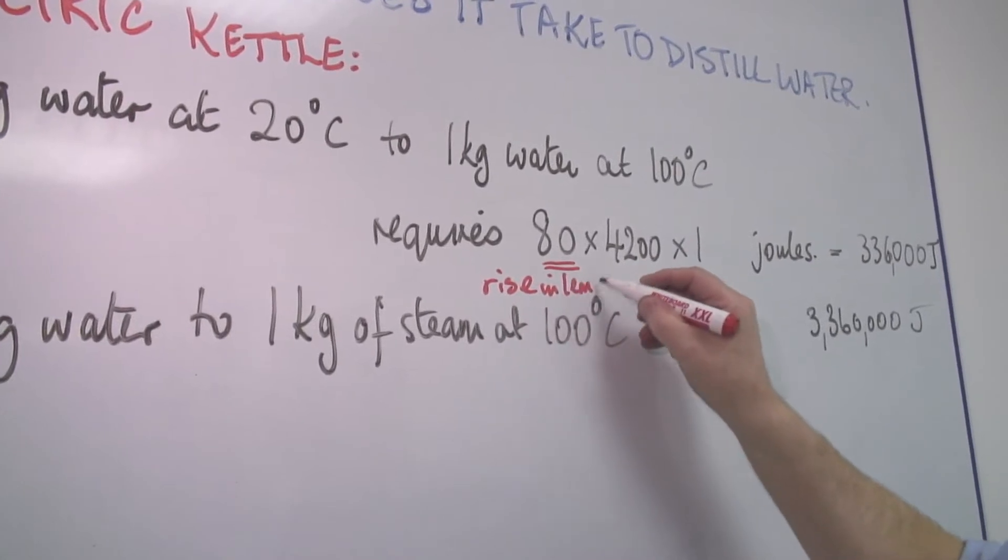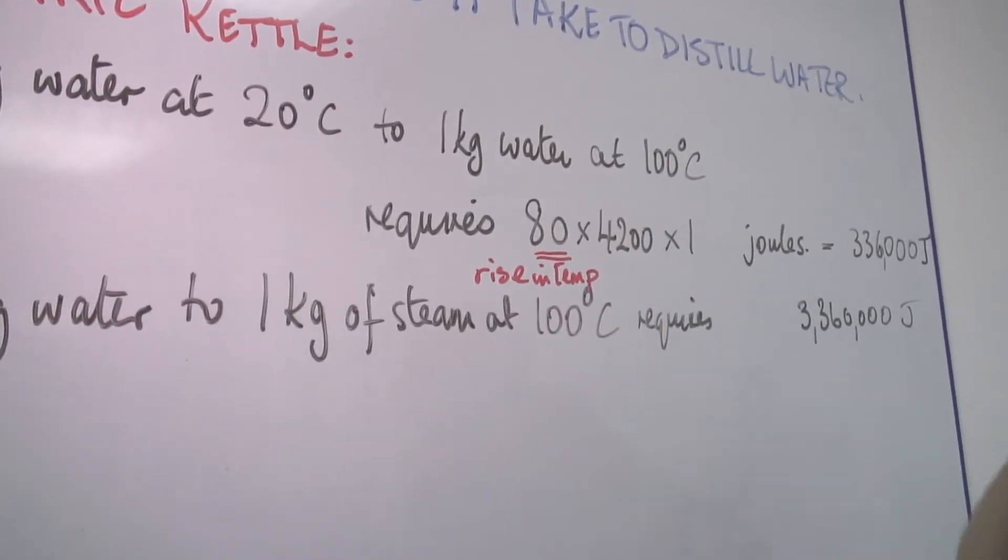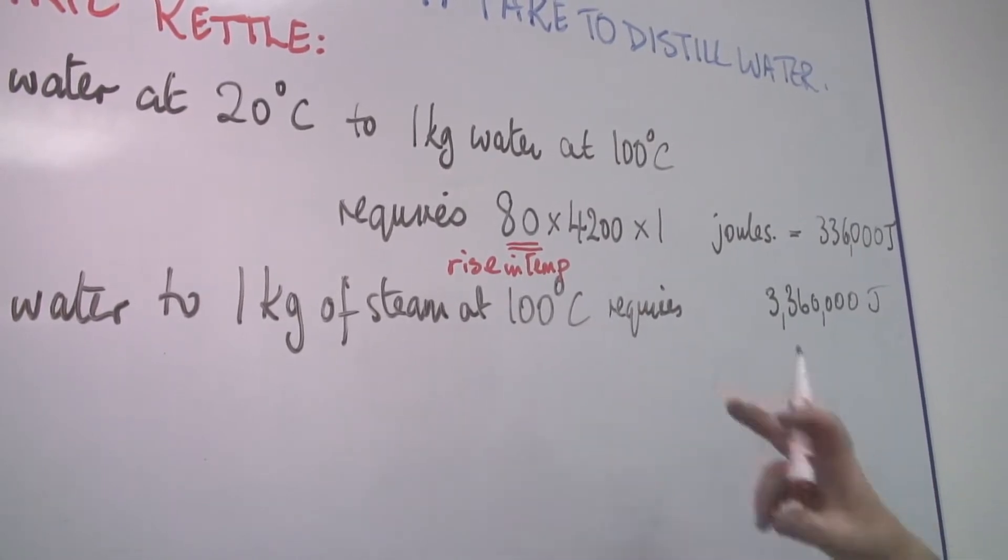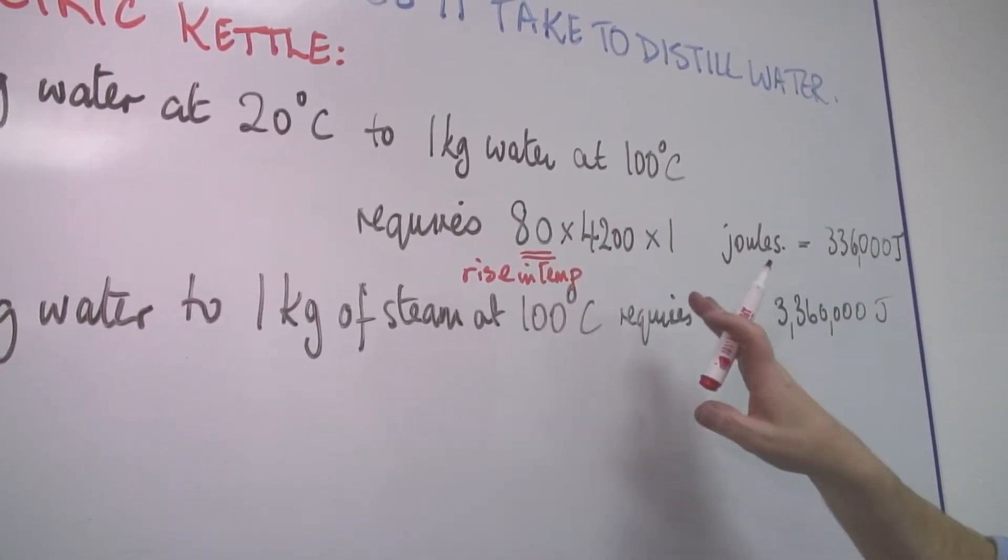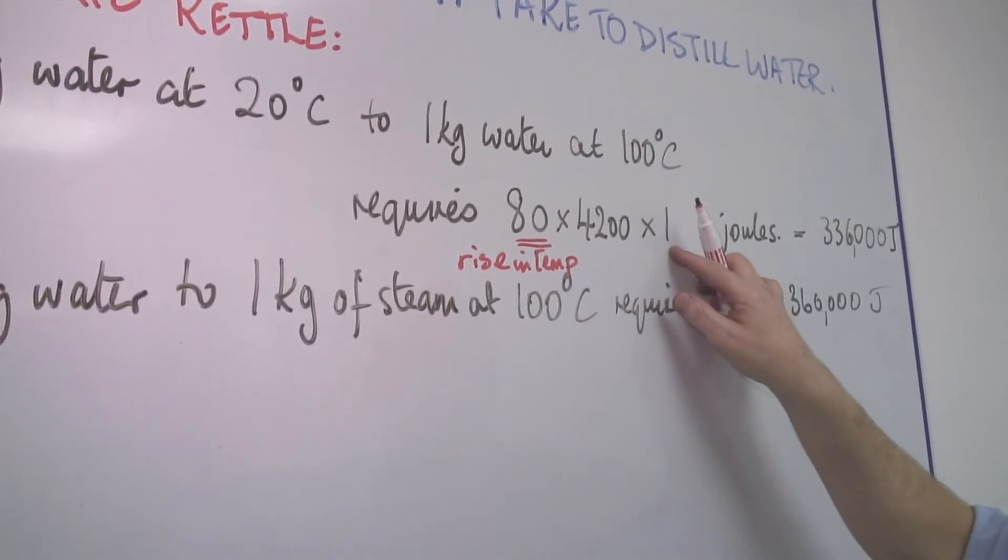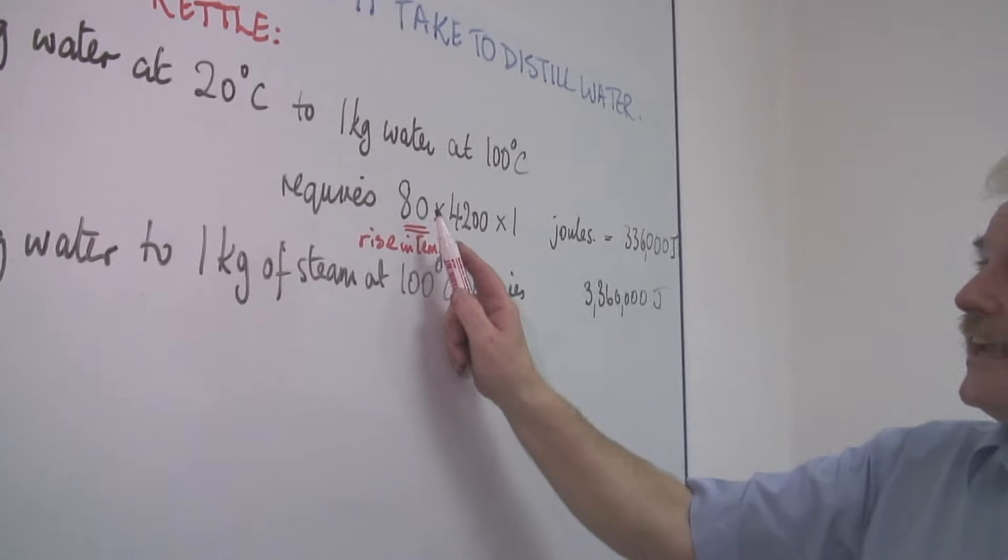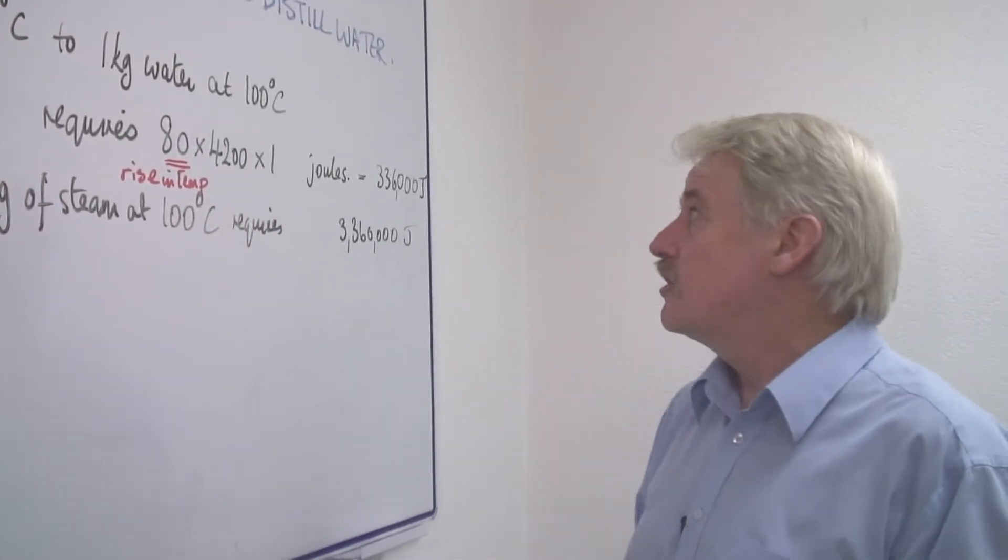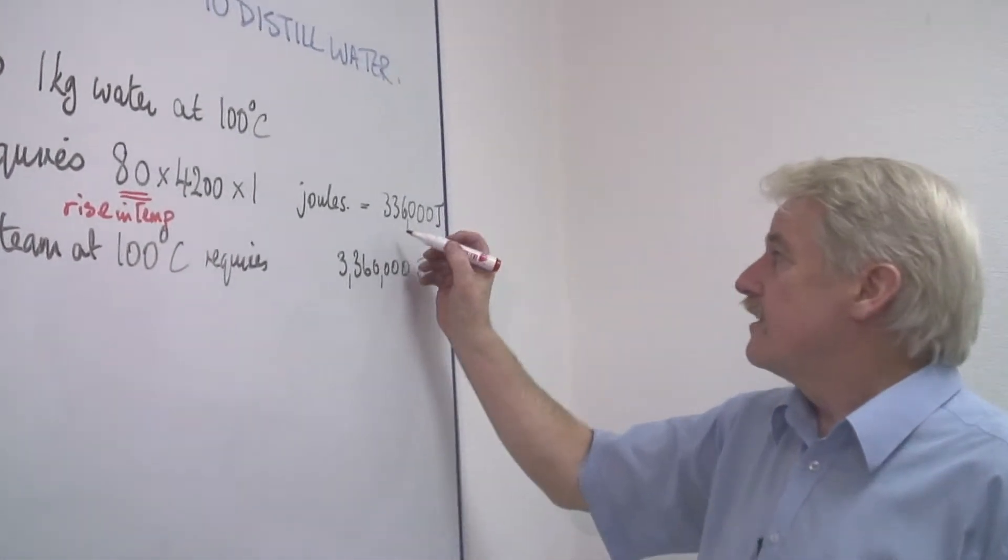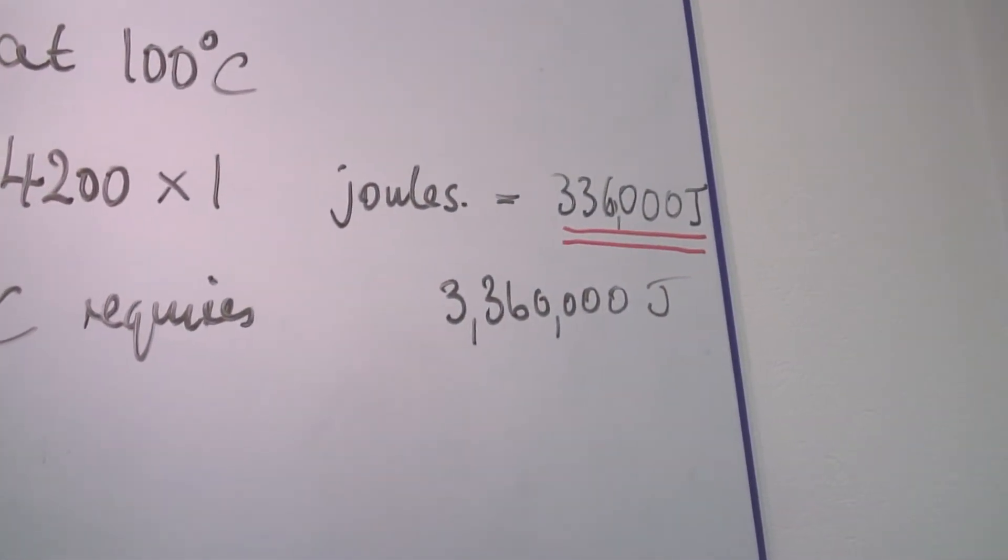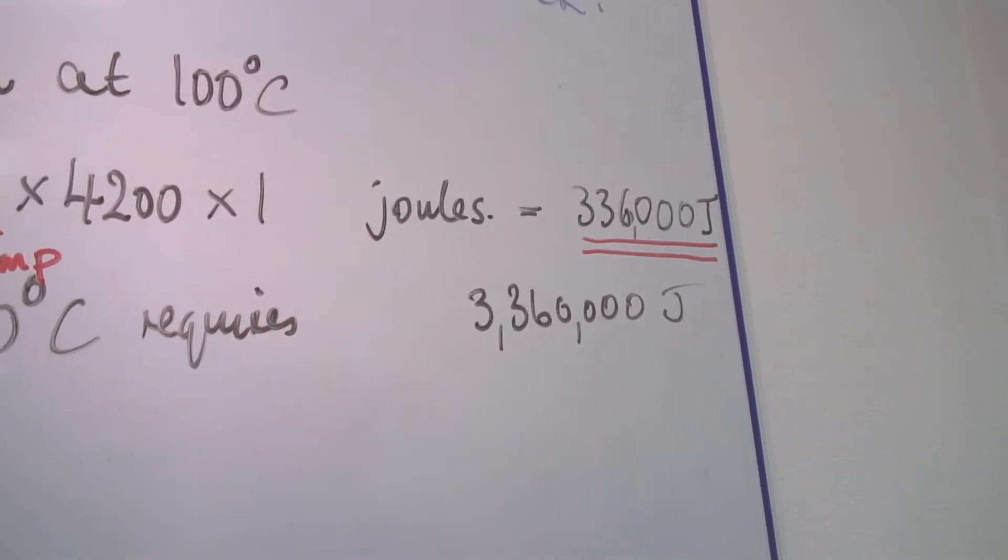And we know that it takes 4,200 joules of energy to raise the temperature of one kilogram of water by one degree Celsius. So by 80 degrees Celsius it takes 80 times as much. In fact, it takes this amount: 336,000 joules.